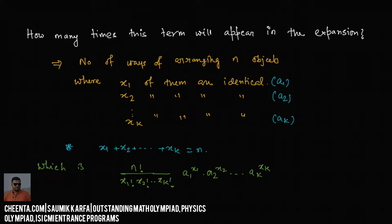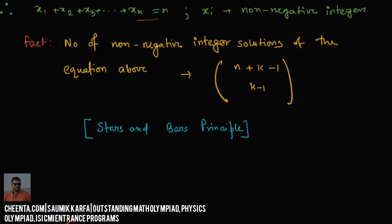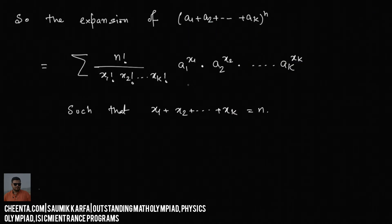How many terms will there be? Whatever the number of non-negative integer solutions of X1 + X2 + ... + XK = N, that many terms will exist. Using the stars and bars principle, the number of non-negative integer solutions is C(N + K - 1, K - 1). The number of terms in the expansion equals this count, and each term looks like the multinomial form described.